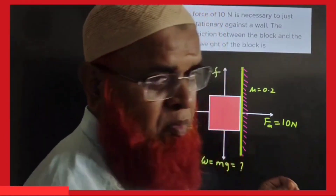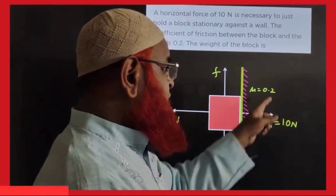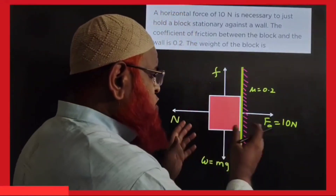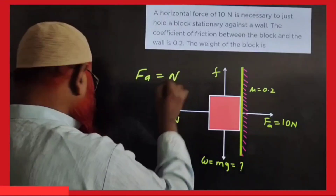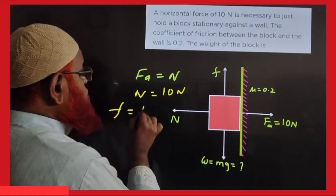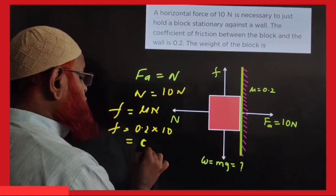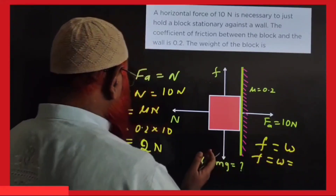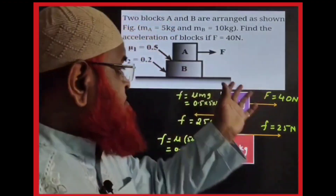A block is fixed on a wall by a horizontal force of 10 newtons with μ=0.2; find the weight of the body. Applied force equals normal reaction, so N = 10 newtons. Friction = μN = 0.2×10 = 2 newtons. Since friction counterbalances the weight of the body, weight = 2 newtons.